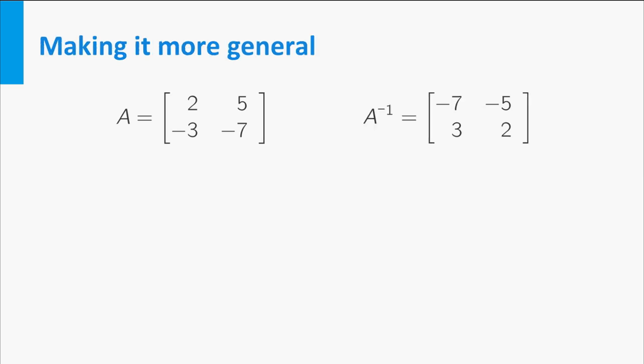Now take a closer look at A and its inverse. You can see that the inverse contains almost the same numbers as A. On the diagonal, the 2 and the minus 7 have traded places, while all other numbers are multiplied by minus 1. Might this be the same for every 2 by 2 matrix?